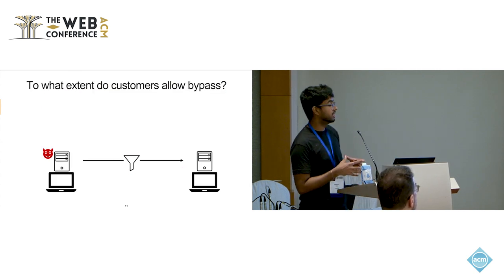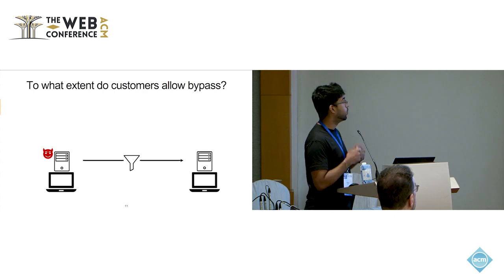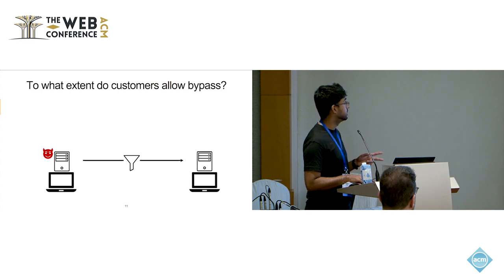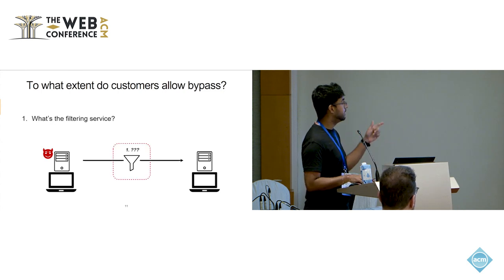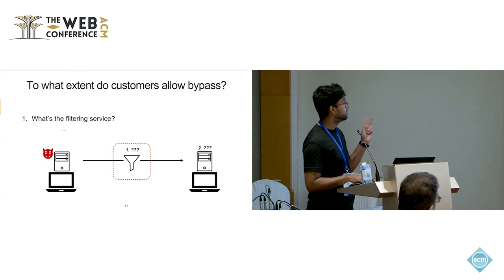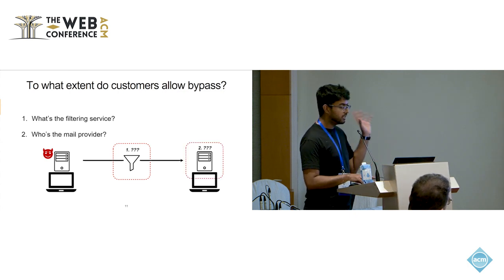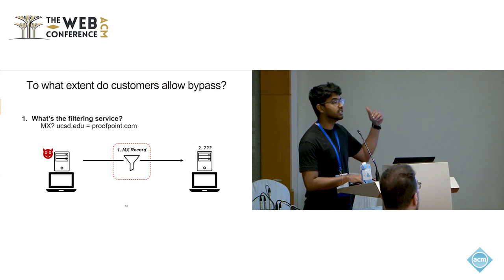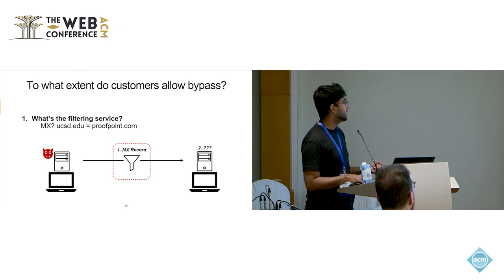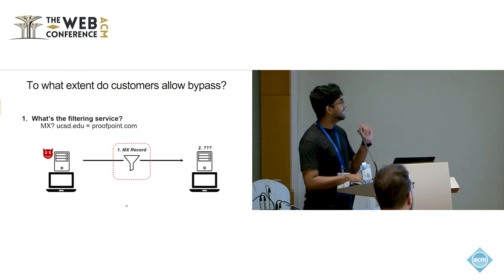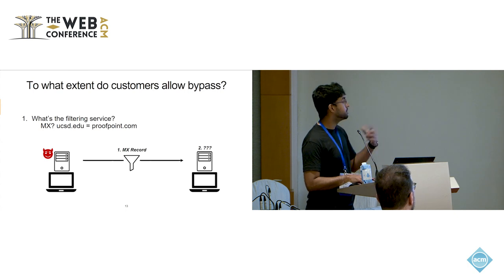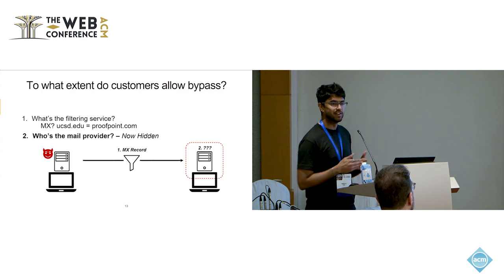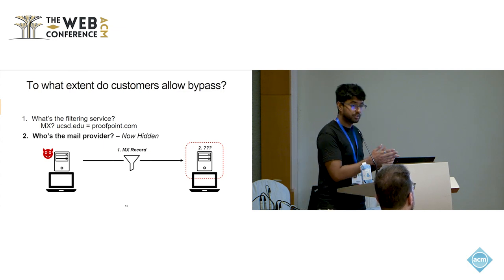The empirical question in this paper was: to what extent do customers allow for this bypass? To answer this, there are two questions we have to answer. First, given any domain, what is the filtering service that they use? And second, what is the mail provider that they use? To answer the first question, it is simple, because your MX record now points to your filtering service — for instance, the MX for UCSD.edu is proofpoint.com, so UCSD uses Proofpoint. But the second question is slightly harder, because previously your MX used to point to the email provider, but now it is hidden behind the email filtering service. So we don't know whether it uses Gmail or Exchange.